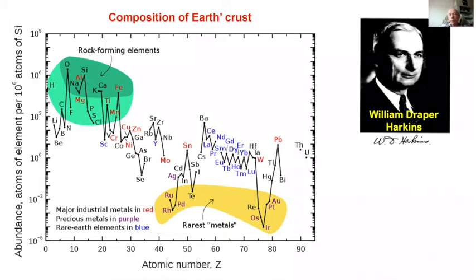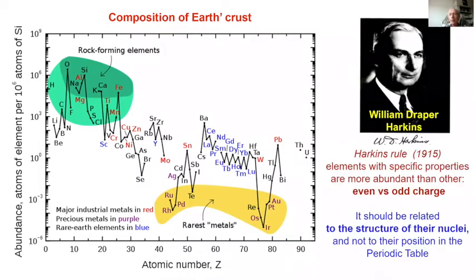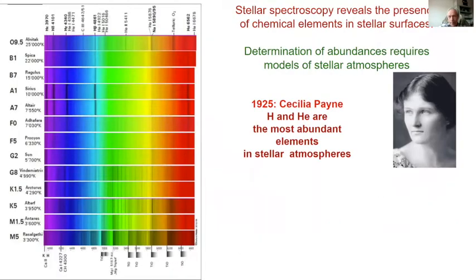William Harkins, an American chemist, noticed that some elements are more abundant than others. In particular, even elements are more abundant than odd ones. He suggested this should not be attributed to their position in the periodic table but rather to the structure of the underlying nuclei.